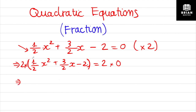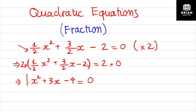Expanding the bracket: two times one-half x² gives us x²; two times three-halves x gives us 3x; and two times negative two gives us negative four. The right side, zero times two, is still zero.